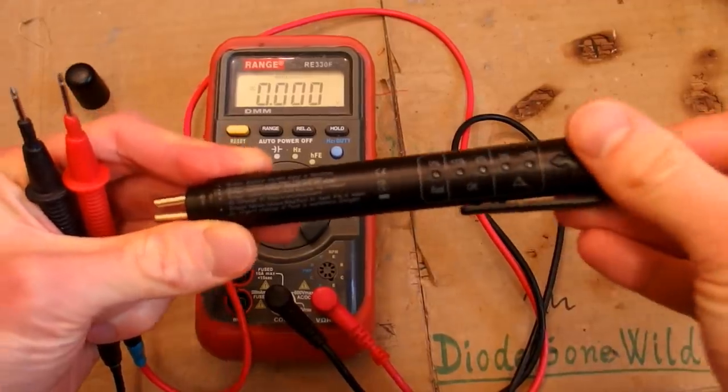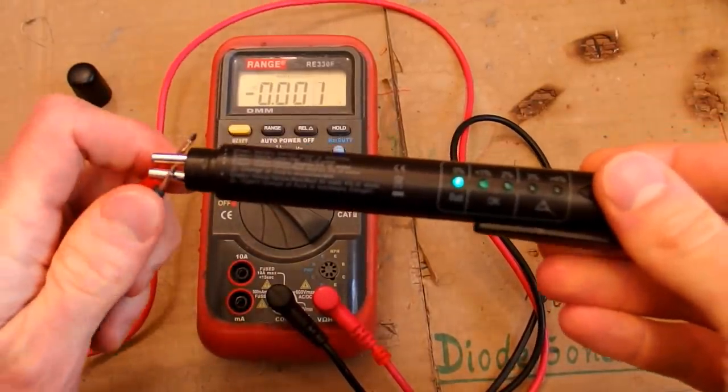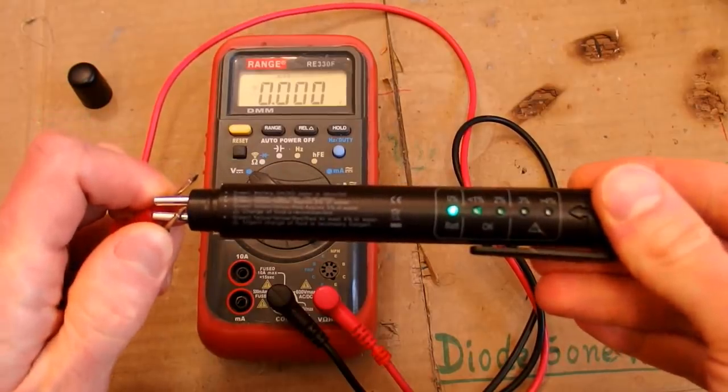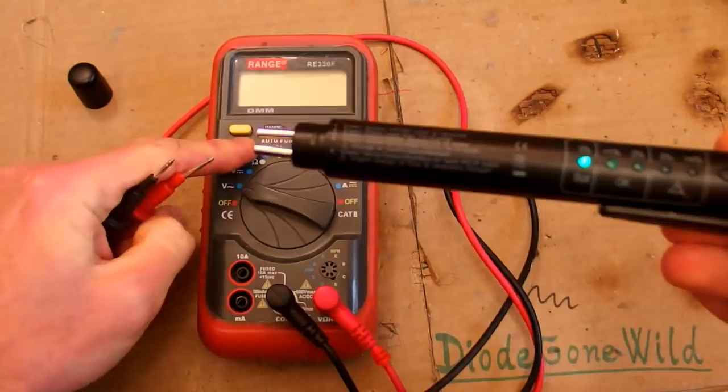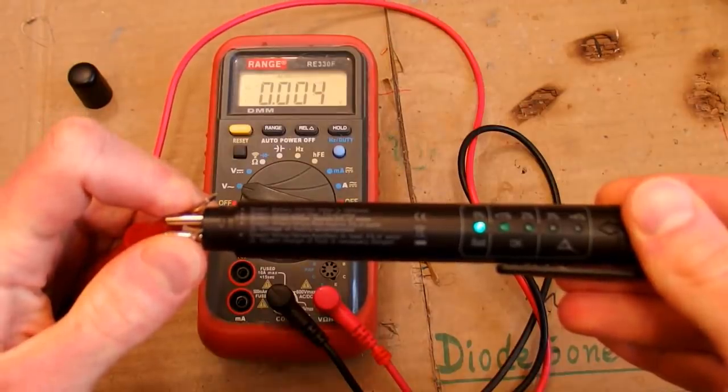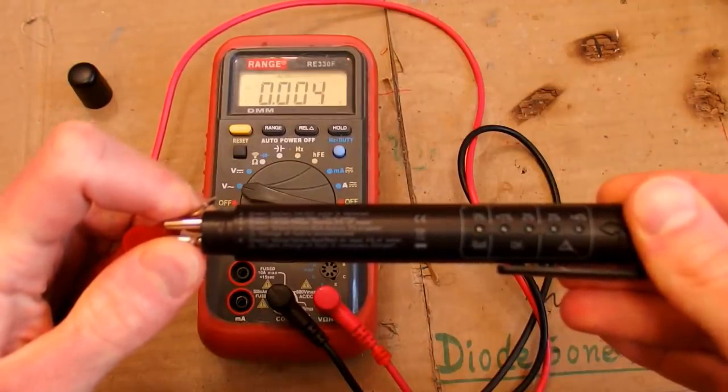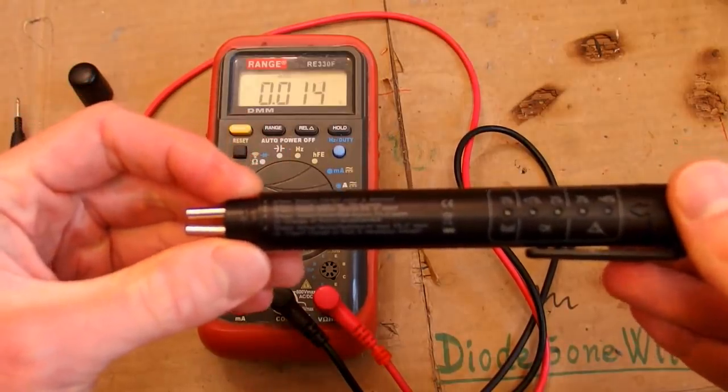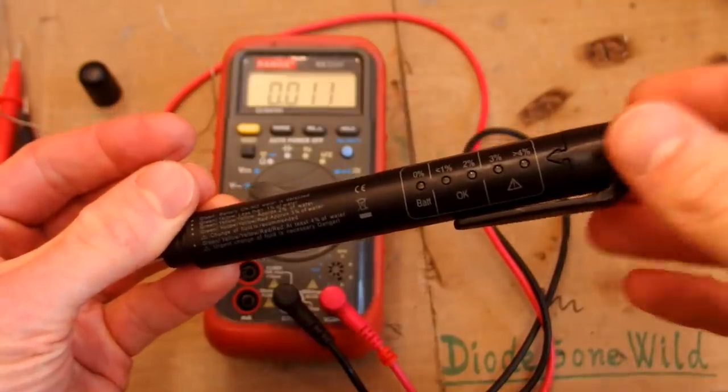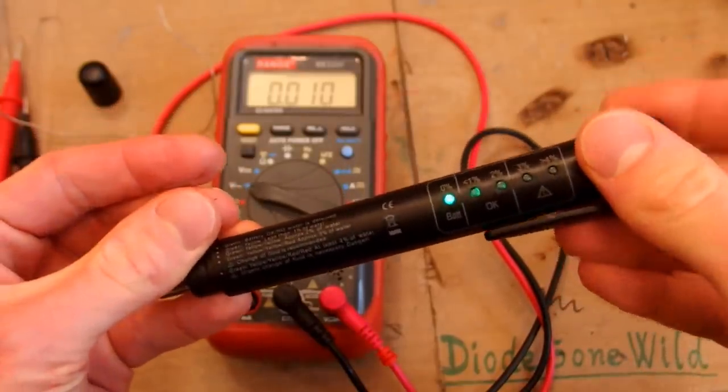Now of course let's try to measure the voltage on the electrodes. Let's try DC. No voltage. Or AC. No voltage. That's weird. It should have some voltage in it to be able to measure the conductivity.